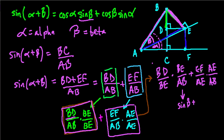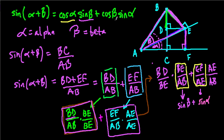Now we're looking for the cosine of alpha and the cosine of beta. AE over AB is the adjacent over the hypotenuse for angle beta — that's the cosine of beta. The only term missing is cosine of alpha, which comes from BD over BE. To find it, we need to identify the angle at vertex B in triangle BDE.